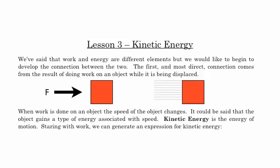So when work is done on an object, the speed of the object changes. And we could say that the object gains some kind of energy. This force is providing work on an object. And there's some kind of energy transfer that's giving the block some type of energy that's associated with speed. And we call that kinetic energy. And kinetic energy really is the energy of motion. So starting with work, let's generate an expression for kinetic energy.